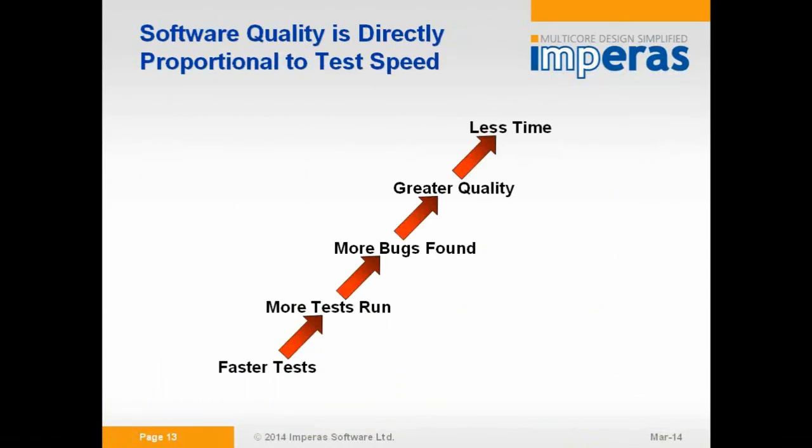The key thing is: faster tests mean more tests run, more bugs found, better quality, less time. This is very much a dynamic approach rather than a formal static approach.